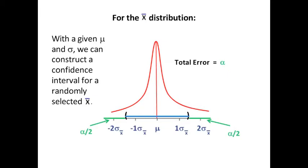You know μ and you know σ, and therefore you can construct a confidence interval around μ, which would allow you to be so many percent certain that a randomly generated sample's mean would fall in that interval.